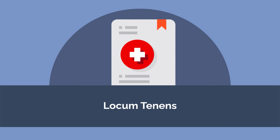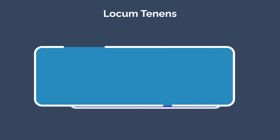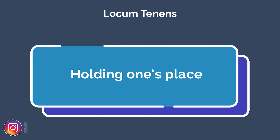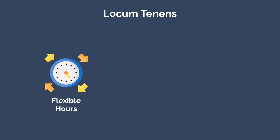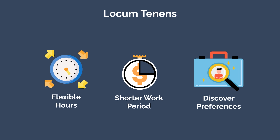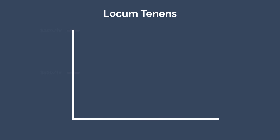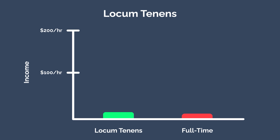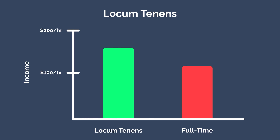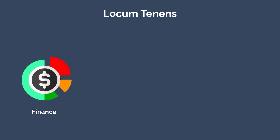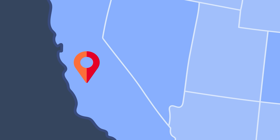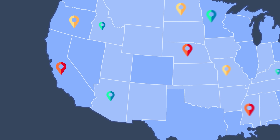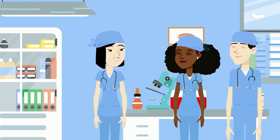There is one other option for physicians known as locum tenens — Latin for 'holding one's place.' When you work in locum tenens, you're basically filling a gap at a hospital. These jobs are ideal for physicians who value flexibility and want to work for shorter periods, enabling them to discover the kind of work they'd like to continue long term. These opportunities come with more independence and a more competitive salary, with doctors earning almost $33 an hour more than their full-time colleagues. However, you're responsible for managing your own personal finances and benefits such as retirement and insurance, and you may not find the job you want in your desired location.